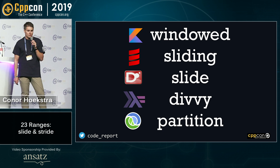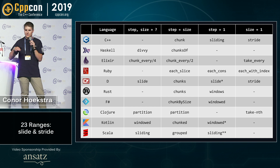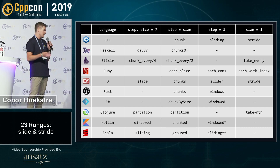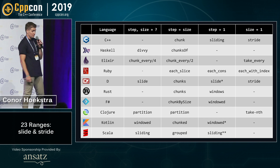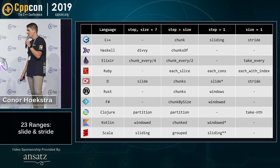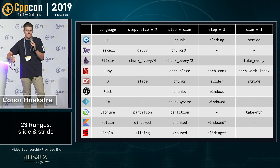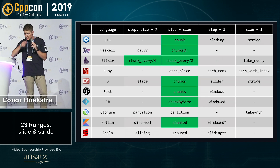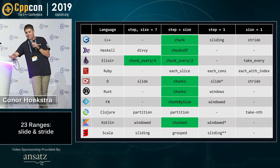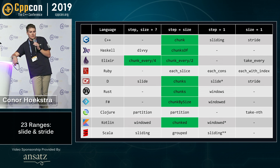If we look at five more languages and examine each of these four algorithms — Kotlin's windowed and the chunk, sliding, and stride from the range-v3 library — we end up with the following diagram. The most consistently named algorithm is chunk, where step is equal to size. Different languages call it slightly different things: Haskell is chunks-of, Elixir is chunk-every, D and Rust are chunks, F# is chunk-by-size, and Kotlin is chunked. I like the name chunk — I might prefer an 's' at the end to be consistent with D and Rust as our sibling languages, but chunk it is.